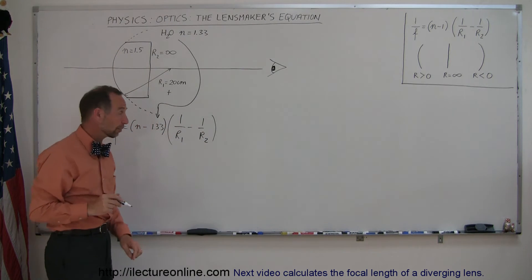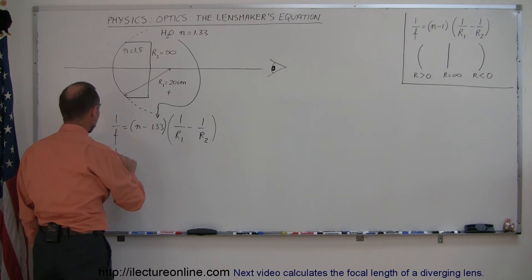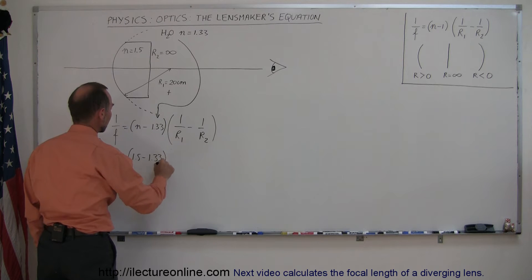Let's plug in the numbers for this problem. 1 over f equals 1.5 minus 1.33 times 1 over r1. Remember,